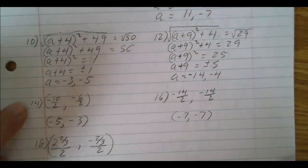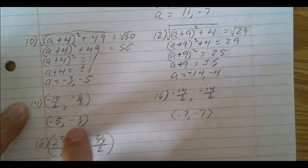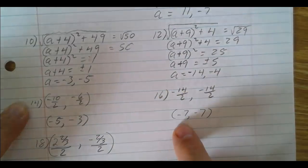14 is negative 5 and negative 3 in that order. That's x, that's y. 16 is negative 7, negative 7.